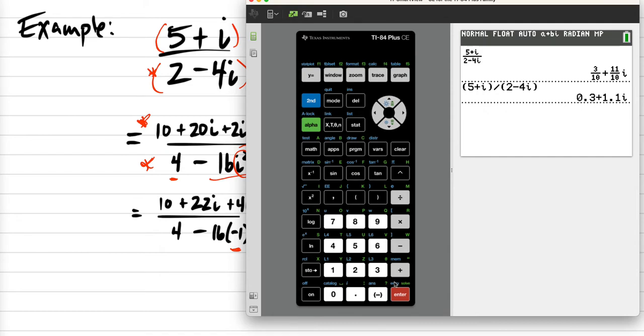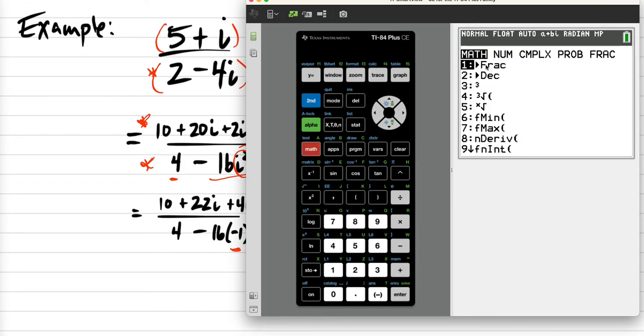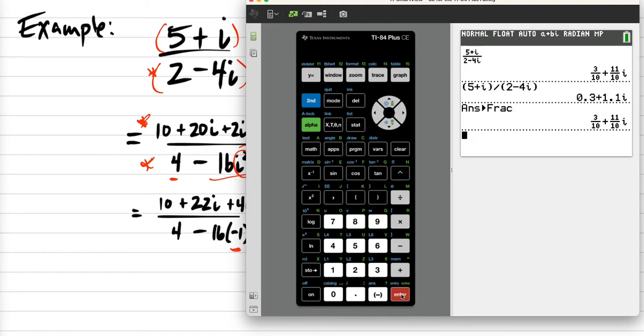And if we did the problem right, what did we get? We had 3 over 10 plus 11 over 10 i. The calculator should tell us either 0.3 plus 1.1 i or, I don't remember if it's going to make it a fraction or not. It does do a fraction. I bet you if I type it like this, it'll probably give me the answer in a decimal. But because I used the fraction button, it probably knew I wanted a fraction answer. Can we use this on the test? No, because on the test, you can only use a scientific calculator. This is a really fast way to check your answers.